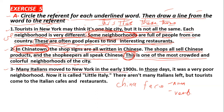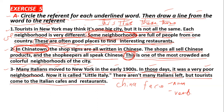Number Three. Many Italians moved to New York in the early 1900s, العديد من الإيطاليون انتقلوا إلى New York في القرن العشرين. In those days, في تلك الأيام, it was a very poor neighborhood, كان حي فقير. Now it is called Little Italy, الآن يسمى إيطاليا الصغير. There are not many Italians left, لم يعد هنالك إيطاليون كثير موجودون, but tourists come to the Italian cafes and restaurants. Those — in those days — refers to 'early 1900s,' بداية القرن العشرين.